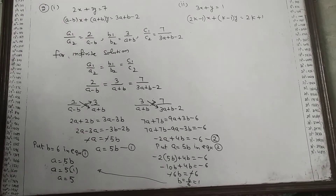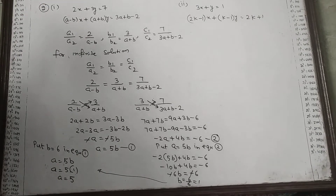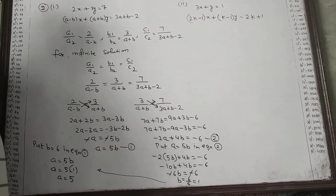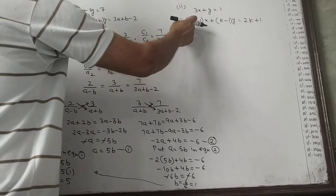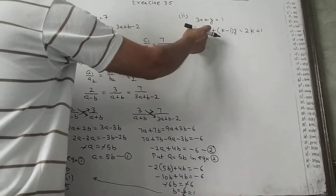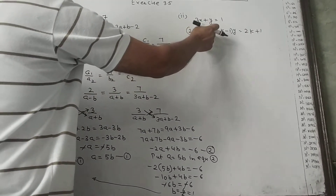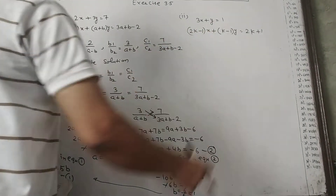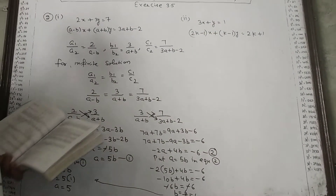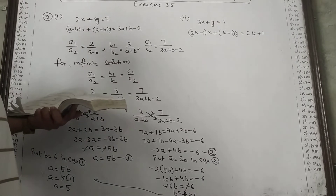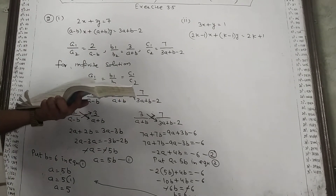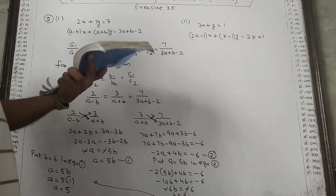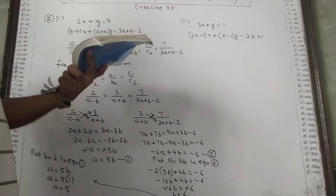Next we have part 2. The equations are: 3x plus y equal to 1, and (2k minus 1)x plus (k minus 1)y equal to 2k plus 1. The question asks for which value of k will the following pair of linear equations have no solution.